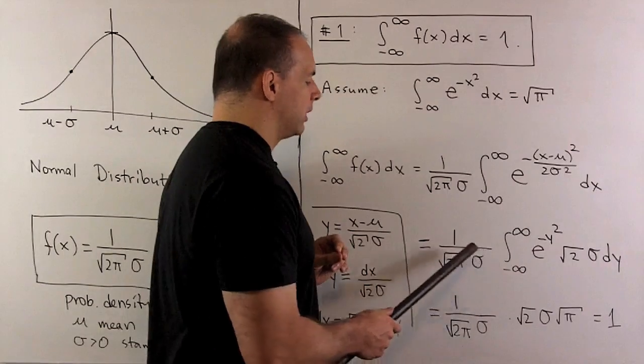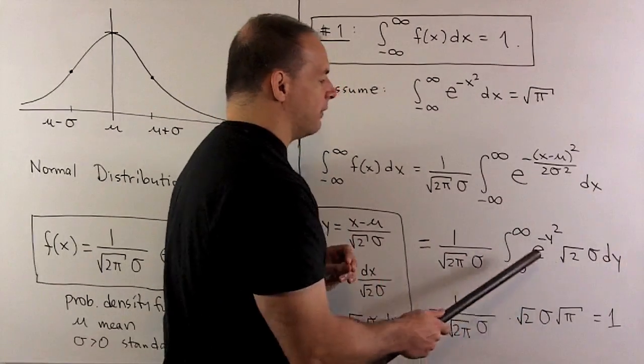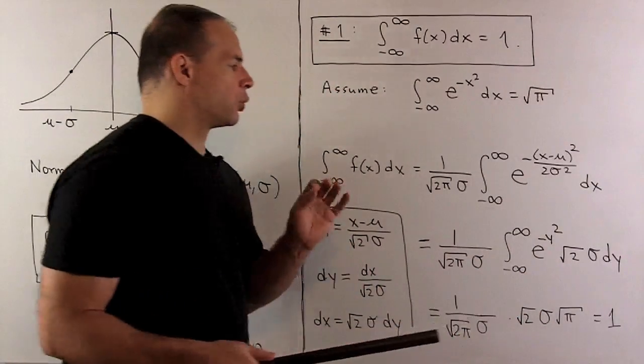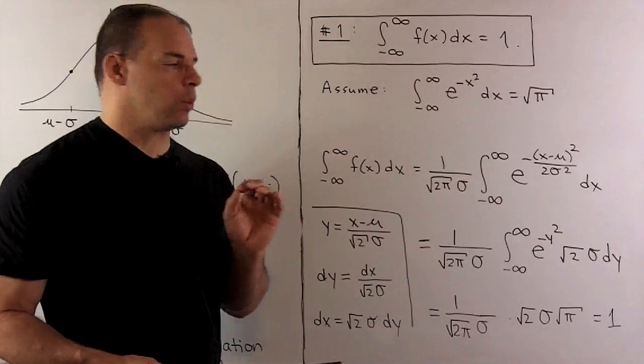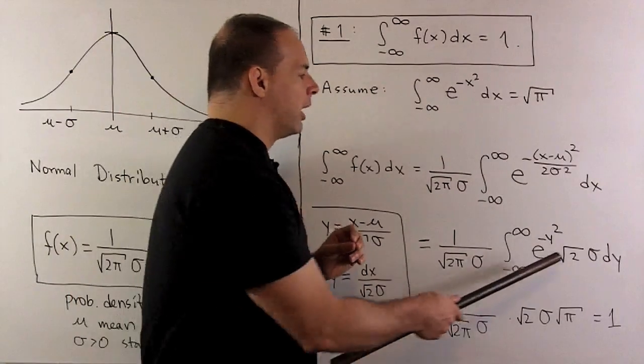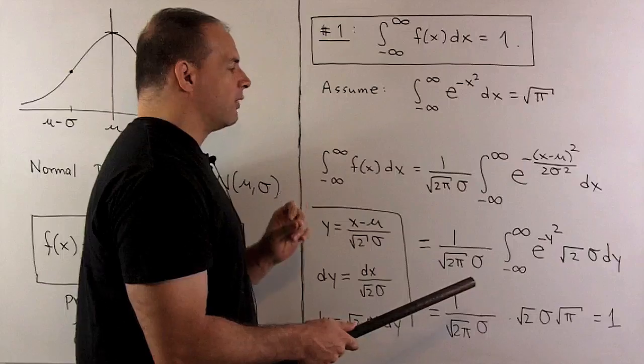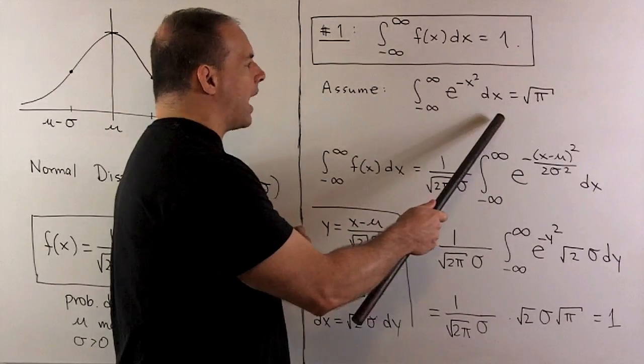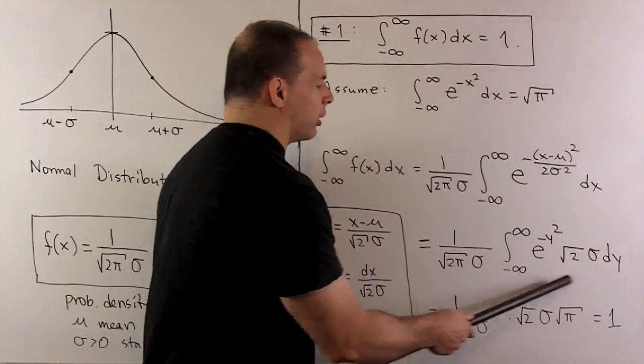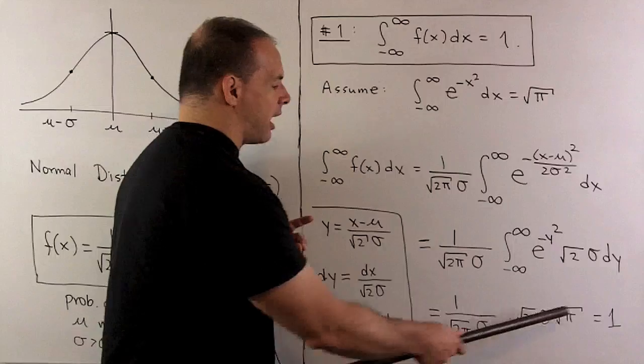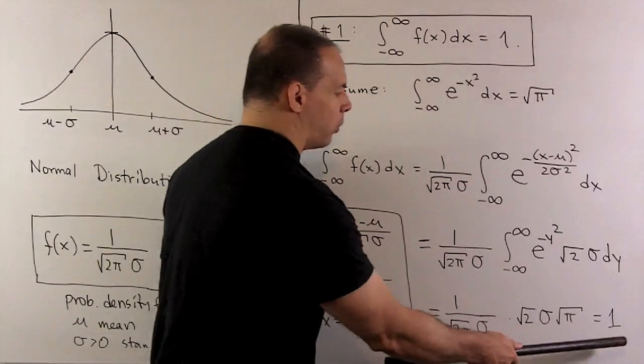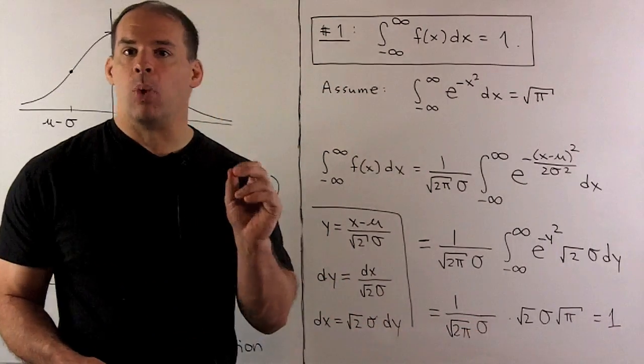So we wind up with, in the integral end, I have e to the minus y² times square root of 2 times σ times dy. Pull out the square root of 2, pull out the σ. Then I'm left with our integral here, with a y instead of an x. So we get a square root of π. And then you note, everything cancels out to leave us with a 1. So step 1 is verified.